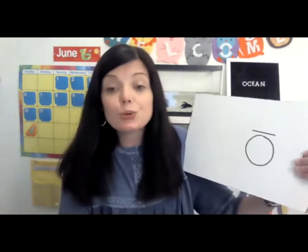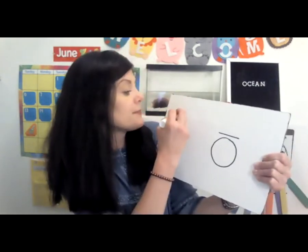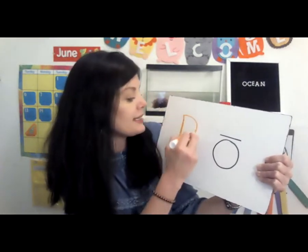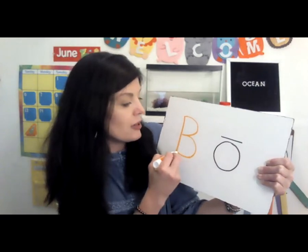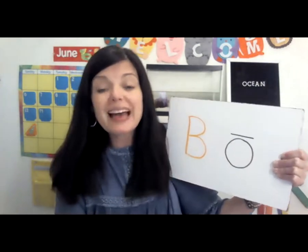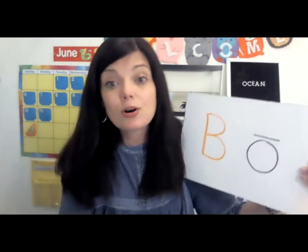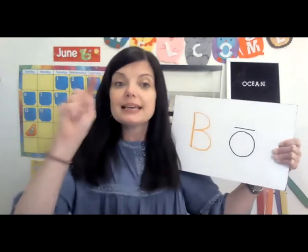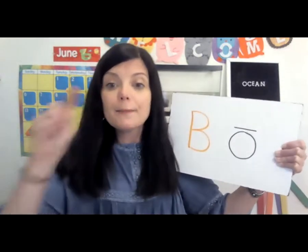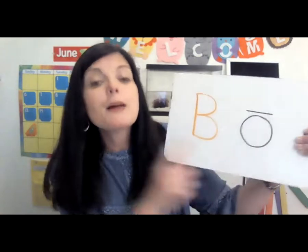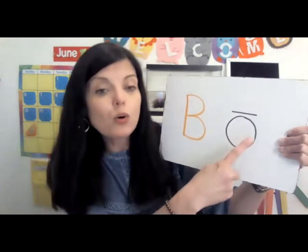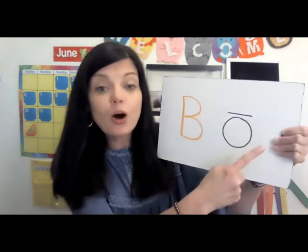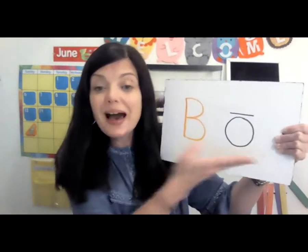I want to do one more, and this is going to be someone's name, so I need to use a big letter. The first letter of our name has to be big or uppercase. This is B and B says B. So let's read this — B, O, Bo. This word is Bo.